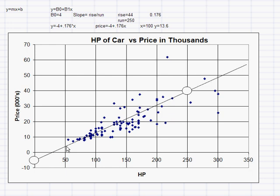It's not just looking at whether there's a positive relationship or a negative relationship or no relationship. We want to really know what is the relationship — what is the equation of this line — and we want to do it because it helps us understand the world. We want to know that the y-intercept is about minus 4 and that the slope is 0.176. That slope tells us that each time we go over one horsepower, we go up 0.176. So one additional horsepower adds 0.176 thousand dollars to the price — about $176 per horsepower.